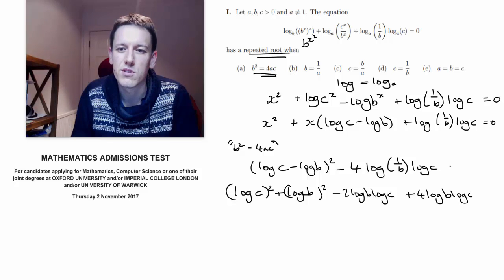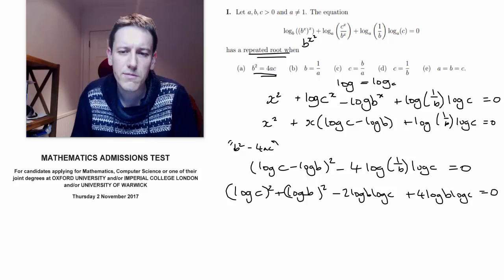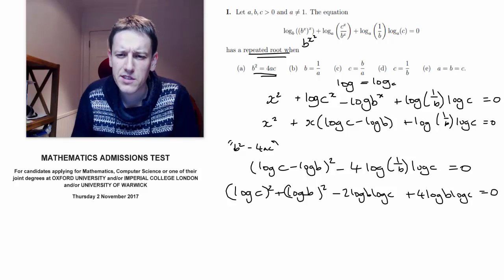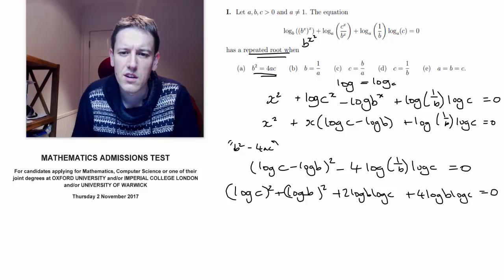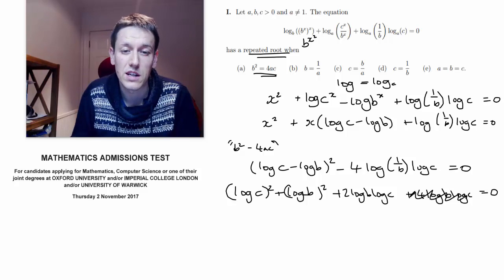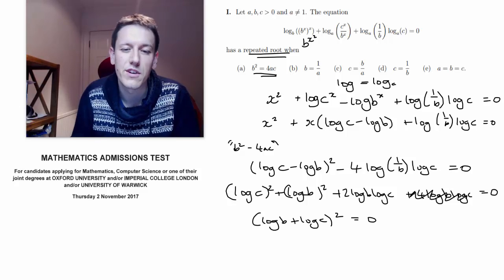If I have a repeated root, I want this to be equal to 0. The discriminant is equal to 0. So minus 2 log b log c plus 4 log b log c, that's just plus 2 log b log c. And then you see what I've got on the left here. Well, everything I've got left here is just log b plus log c squared equals 0.